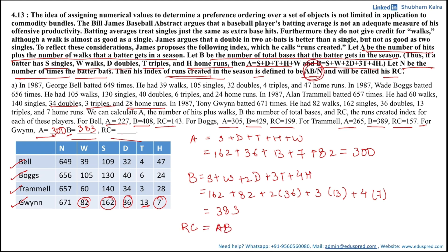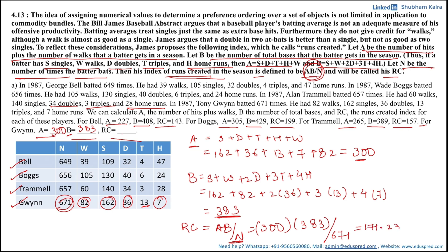Next, RC equals AB divided by N. We have A as 300 and B as 383, so multiply 300 by 383 and divide by N, which is 671. This equals approximately 171.236. Since the other RC values are given as whole numbers, we follow the same convention, so RC for Gwynn is approximately 171.